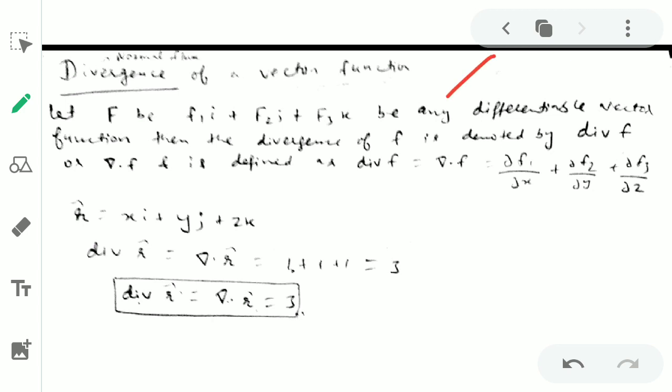This means normal flux through a surface that we want to calculate. So we assume we have a vector F = f₁i + f₂j + f₃k, which is any differentiable vector function. Then the divergence is denoted by div F or ∇·F, and it is defined as div F = ∂f₁/∂x + ∂f₂/∂y + ∂f₃/∂z.